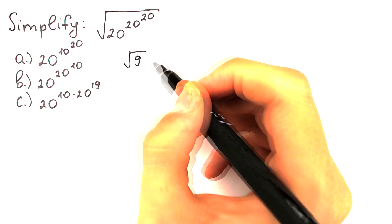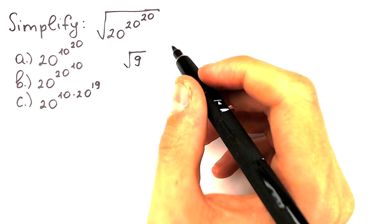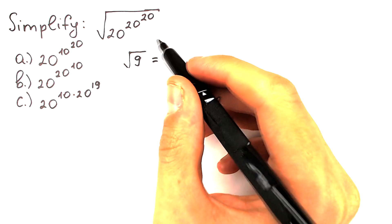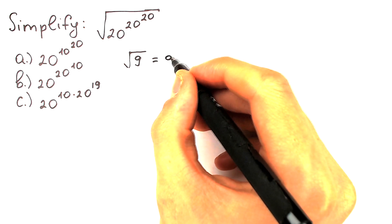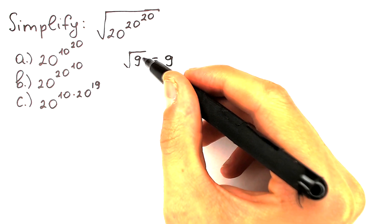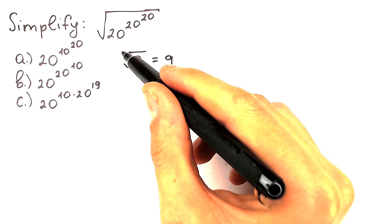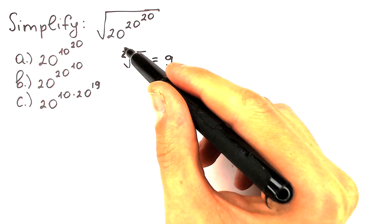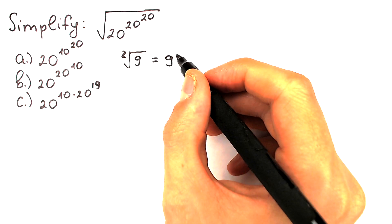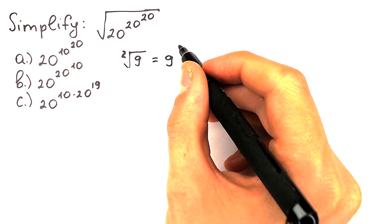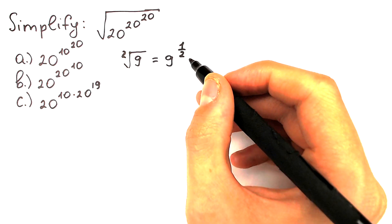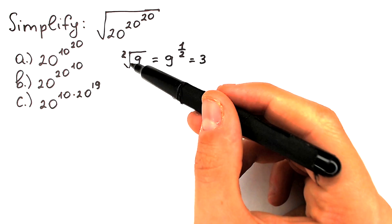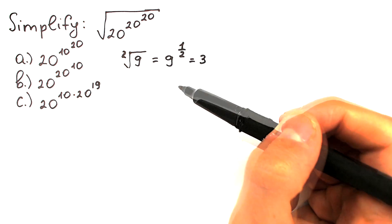Everyone knows that the square root of 9 equals 3. But we can also write it another way — as a fraction. We can write it as 9 to the power 1/2, because 2 is the power of this square root. So 9 to the power 1/2 equals 3. We need to understand how to express it from radical form to fractional exponent form.